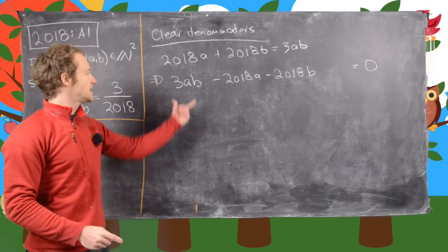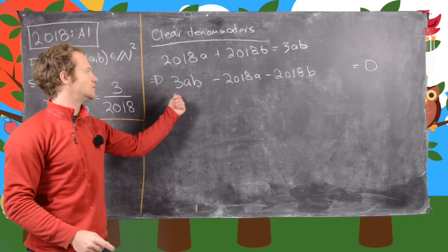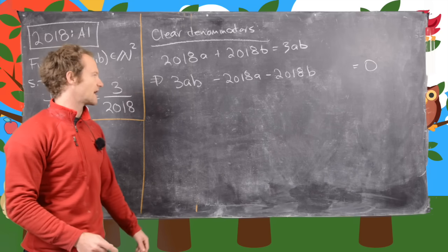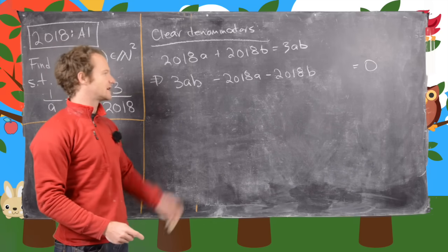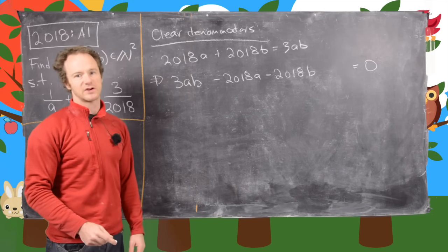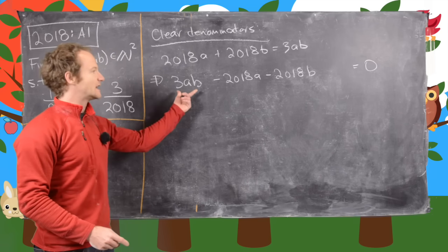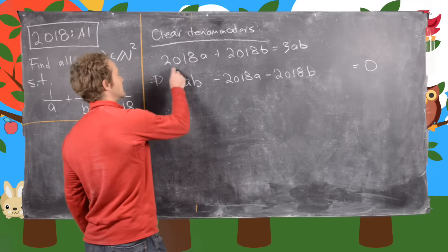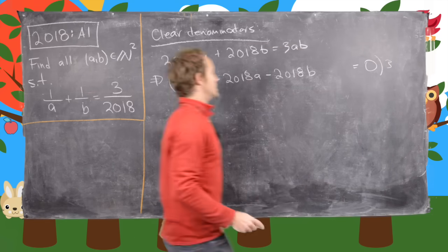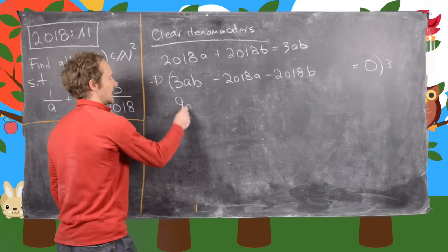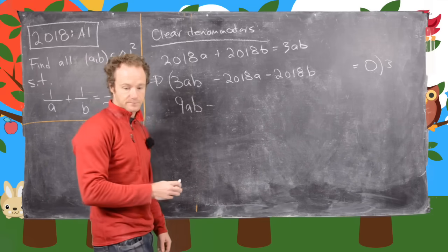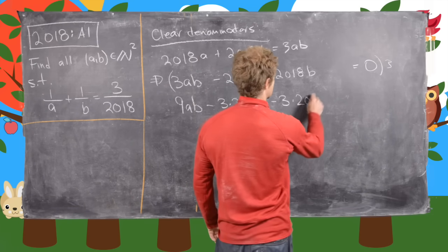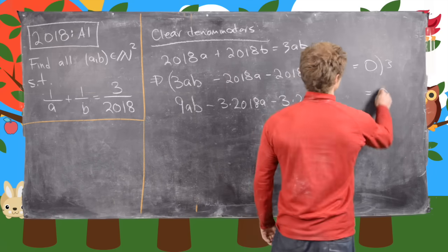From here it looks like we could factor this into a binomial starting with A and a binomial starting with B that multiply to give 3AB. But we'd like more symmetry, and we can get that by replacing 3 with 9 — multiplying the whole thing by 3 — giving us 9AB − 3·2018·A − 3·2018·B = 0.